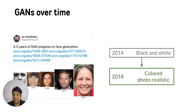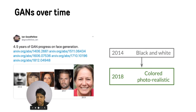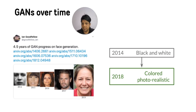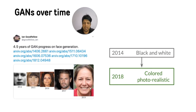Let's understand how GANs have evolved over time. In 2014, GANs could only generate a black-and-white and very blurred image of a face. Within about 4.5 years, by around 2018, they were able to generate a colored and very realistic image.